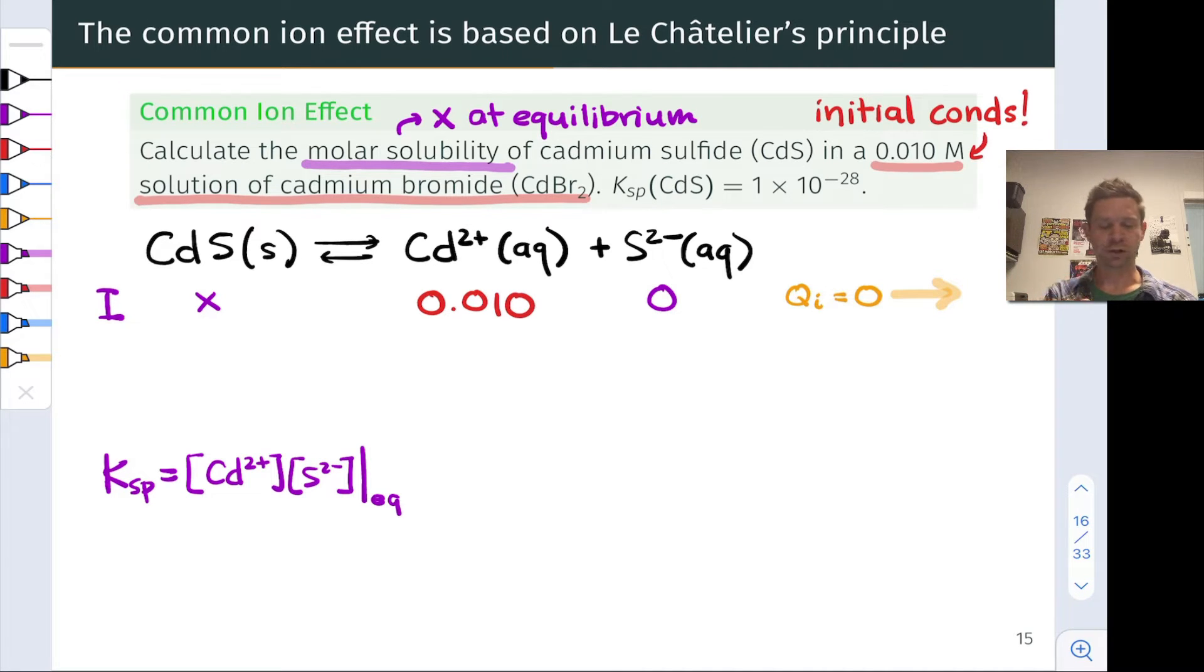At this point, on the change line, we're going to call the change minus x. We're going to imagine, because x is a variable, we want to solve for the amount of cadmium sulfide, or the concentration of cadmium sulfide, that goes into solution, that actually dissolves.